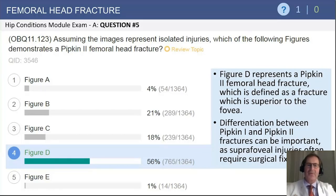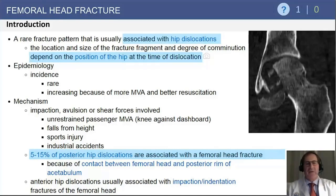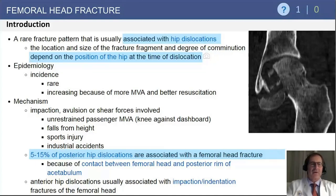It's important to understand the difference between a PIPKIN I and a PIPKIN II fracture, because PIPKIN II fractures commonly require fixation. Femoral head fractures are most commonly associated with hip dislocations, and the size and location of the fracture can depend on the position of the hip at the time of dislocation. Five to 15 percent of posterior hip dislocations are associated with a femoral head fracture, so be particularly cognizant of the presence of a fracture when reducing a hip dislocation.